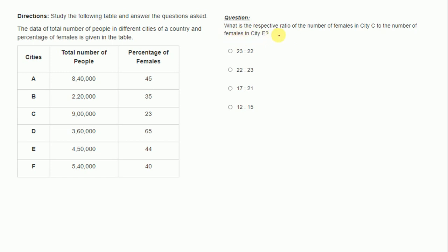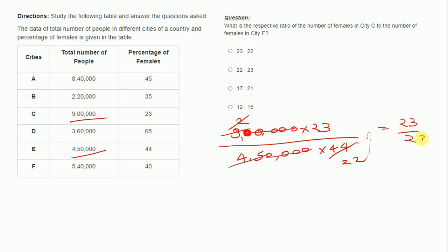What is the respective ratio of the number of females in city C to the number of females in city E? It will be 900,000 into 23 because this percentage is of females. I am not dividing by 100 because it will be cancelled as it is ratio. So it will be divided by 45,000 into 44. These zeros can be cancelled, but there are four zeros only not five. So it will be 90, not 9. Now 45 into 2, and this 2 can cancel 44 by 22. We will be left with 23 divided by 22. Option A is correct.